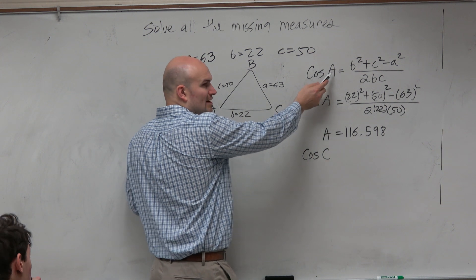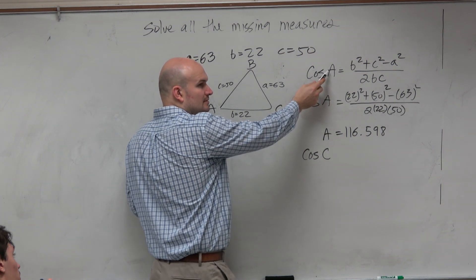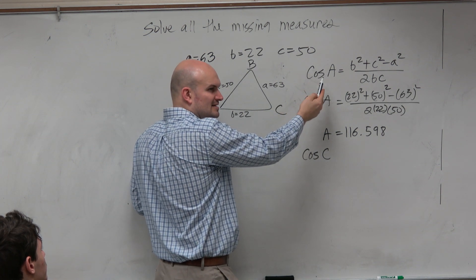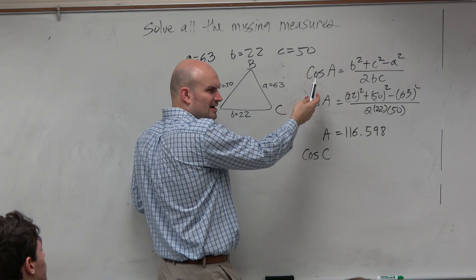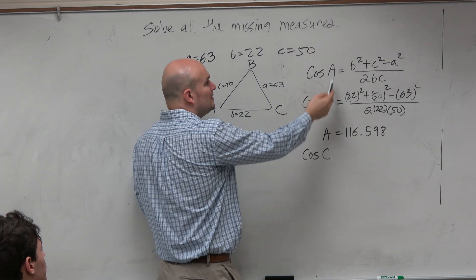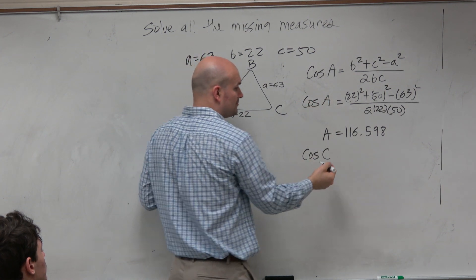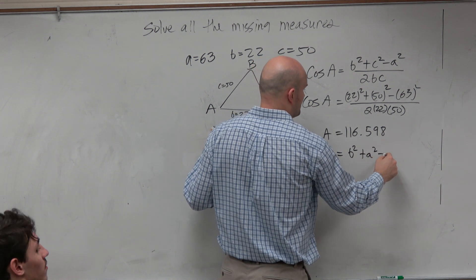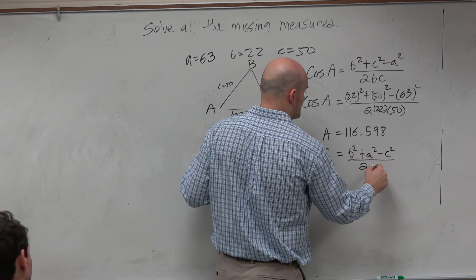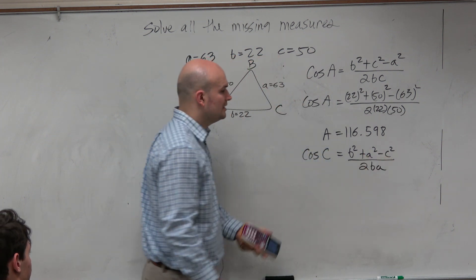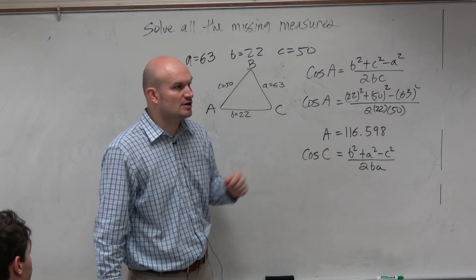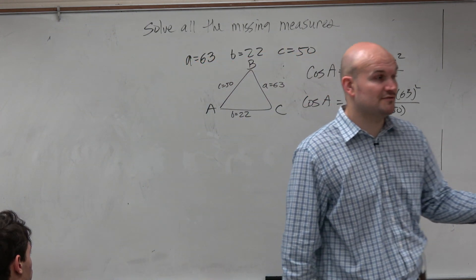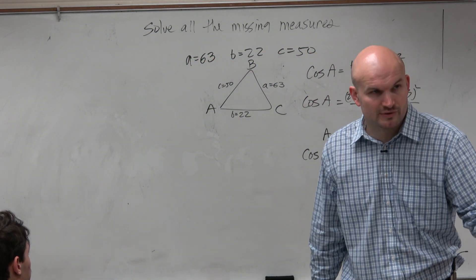A, B, and C are all interchangeable. So now, wherever I have an A, wherever we have an A, we're just going to replace it with a C. So therefore, it's B squared plus A squared minus C squared, all over 2 times B times A. Can you guys now plug in enough information to solve for C? And if you're OK with the Law of Cosines, and you got the right answer the first time, there's probably not a big deal of doing it again.